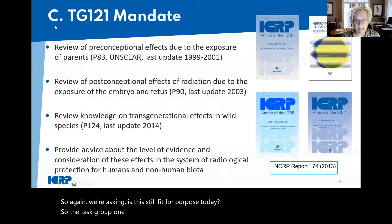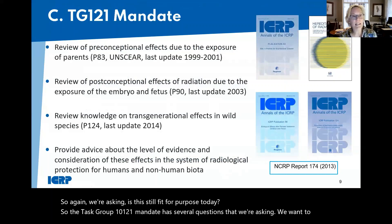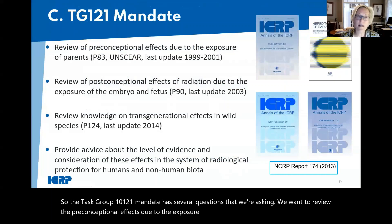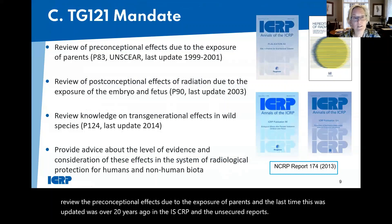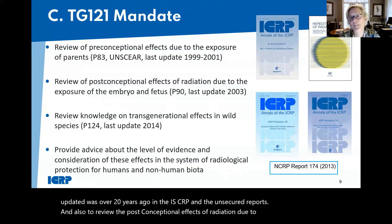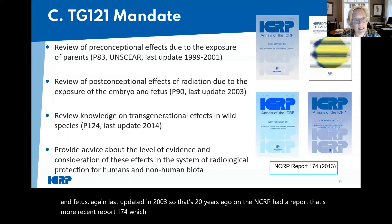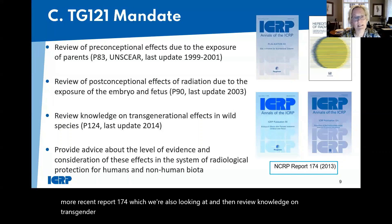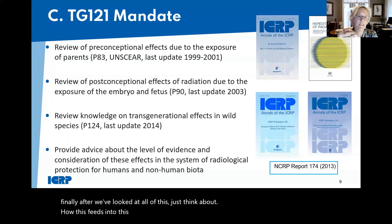The Task Group 121 mandate has several questions. We want to review preconceptional effects due to exposure of parents — last updated over 20 years ago in ICRP and UNSCEAR reports. Also to review post-conceptional effects of radiation on the embryo and fetus — last updated in 2003. The NCRP had a more recent report, Report 174, which we're also looking at. And review knowledge on transgenerational effects in wild species — last updated in Publication 124. Then, think about how this feeds into the system of radiological protection and advice.